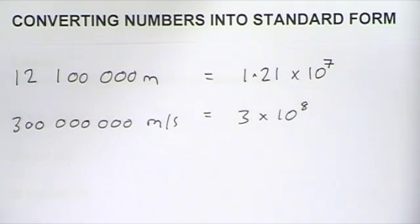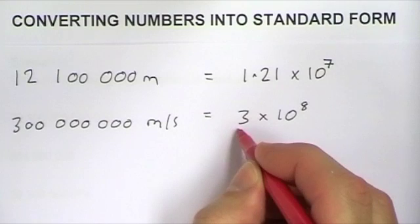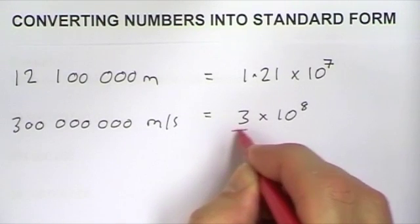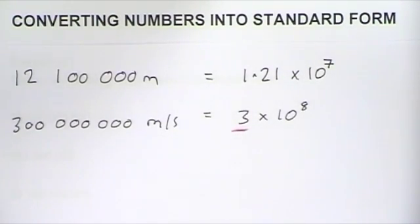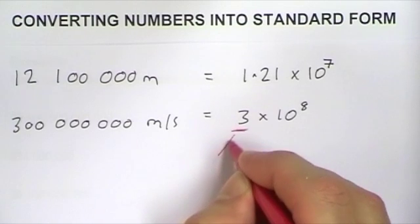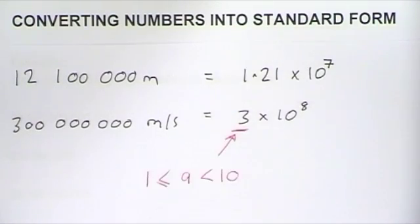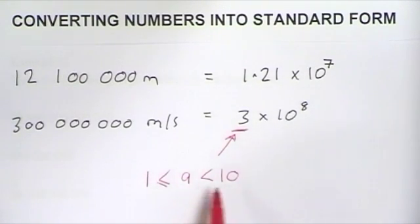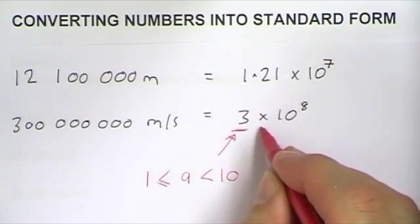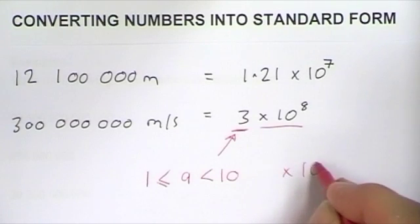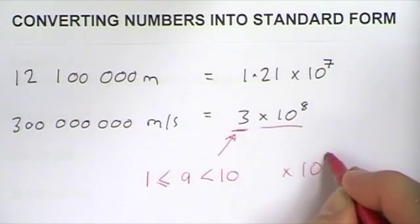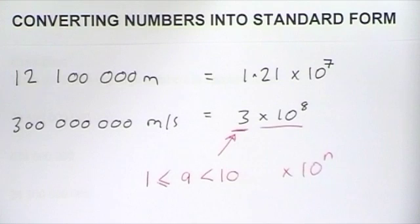Numbers in standard form are written in two parts. The first part is a number between 1 and 10 — I'll call it A. Notice that the number could be equal to 1, but it must be less than 10. The second part is A times 10 to a power of n, where n can be any integer.